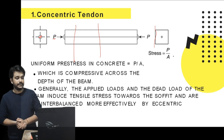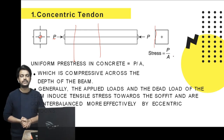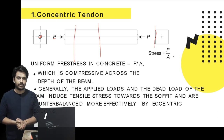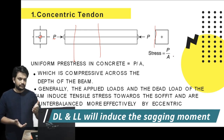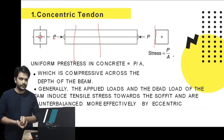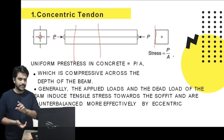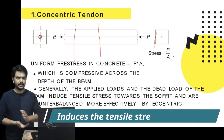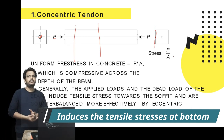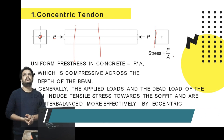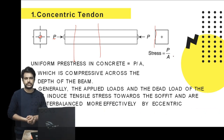Generally, the applied load and dead load of the beam induce a tensile stress at the bottommost fiber. These are bending stresses — compressive in nature at the top fiber and tensile in nature at the bottom fiber — due to live load or dead load. The motive of prestressing is to eliminate the generation of tensile stresses, which generate at the bottommost fiber.